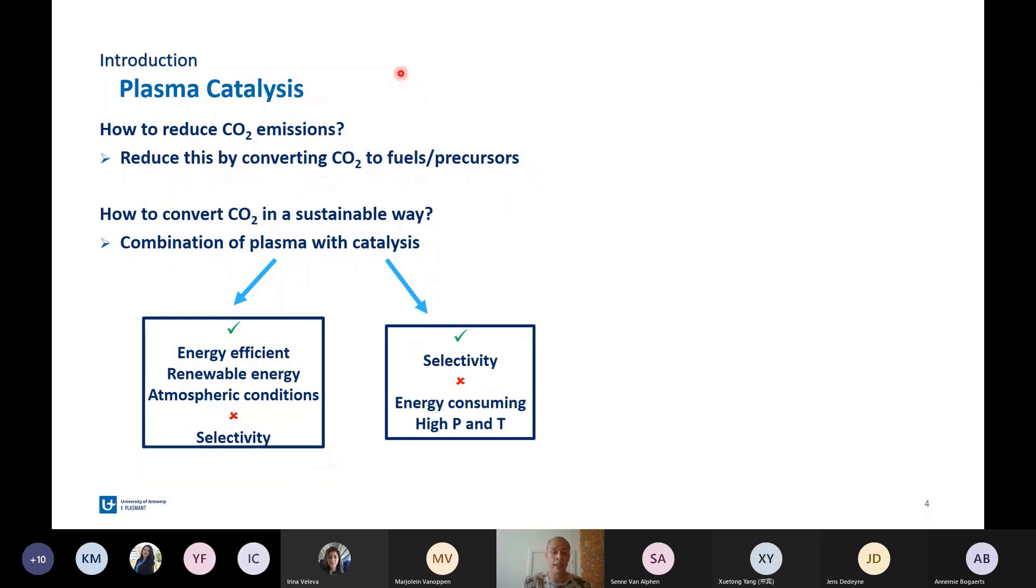On the other side, we have the catalyst, and catalytic conversion is very selective, which is good because the plasma is not, but catalysis is generally energy consuming because catalytic conversion takes place at high pressure and high temperatures, but the plasma can overcome this as the plasma is more energy efficient and can operate at atmospheric conditions.